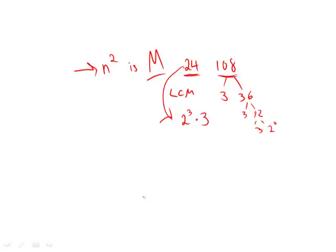So least common multiple for 24 is 2 cubed times 3. Least common multiple for 108, we can now say is 3 cubed times 2 squared.